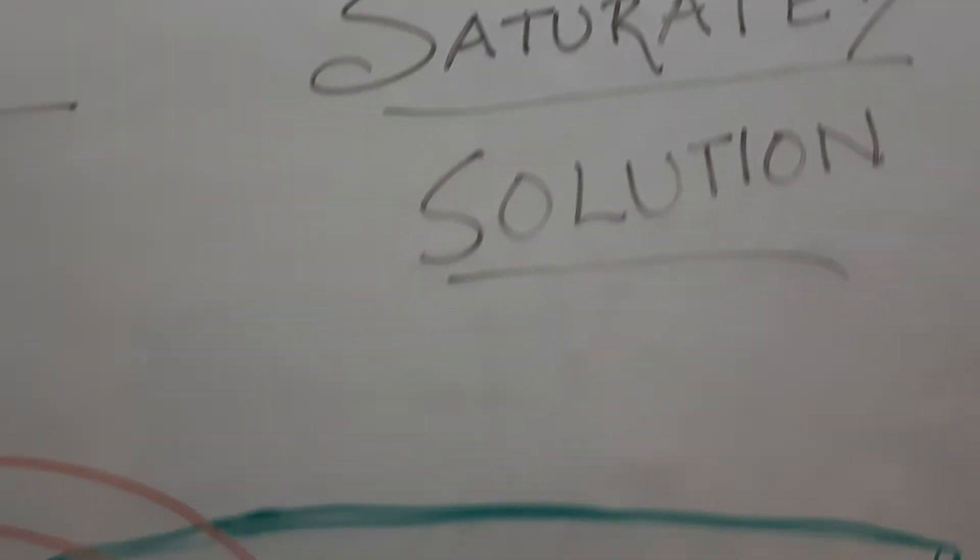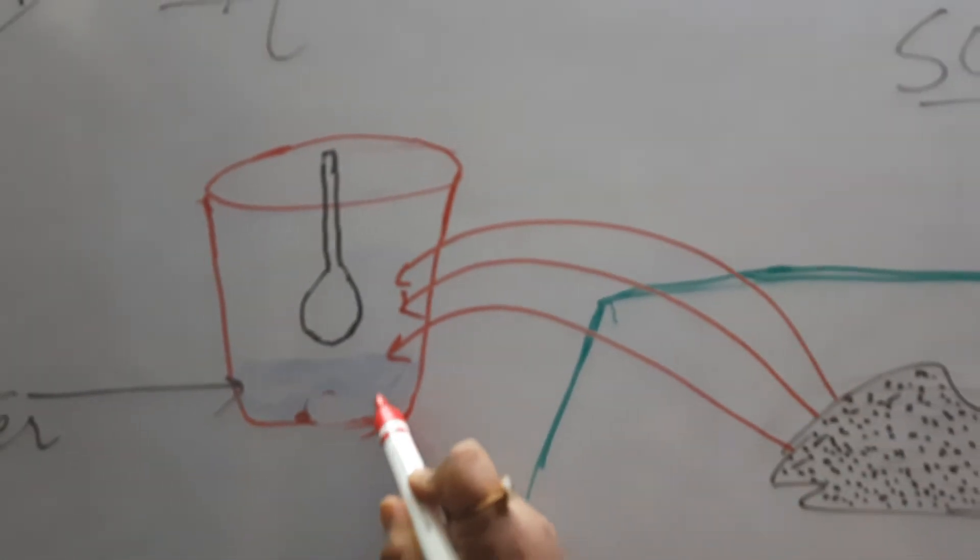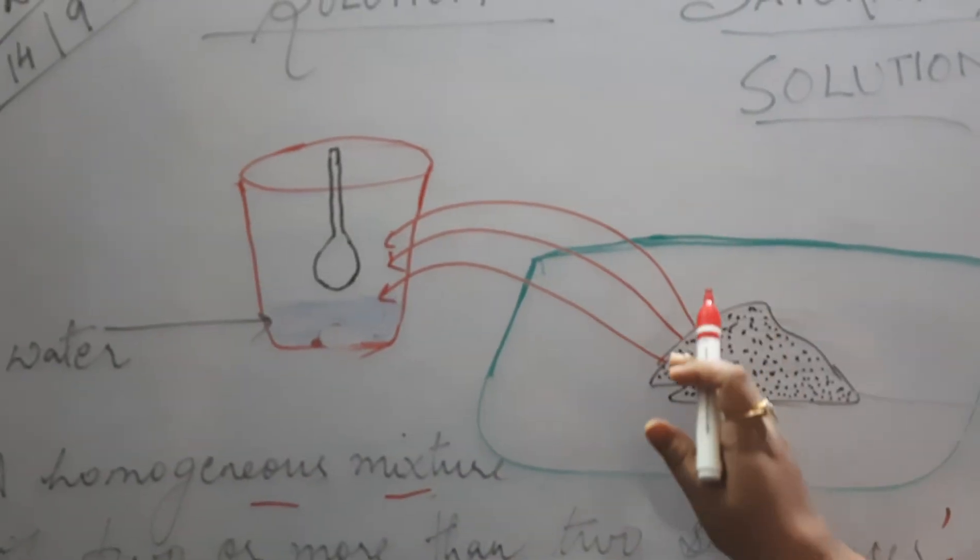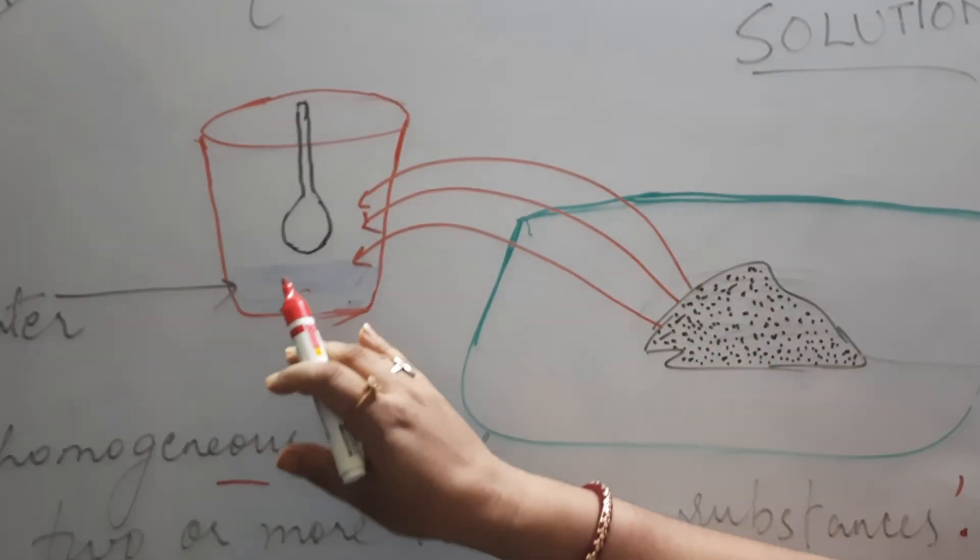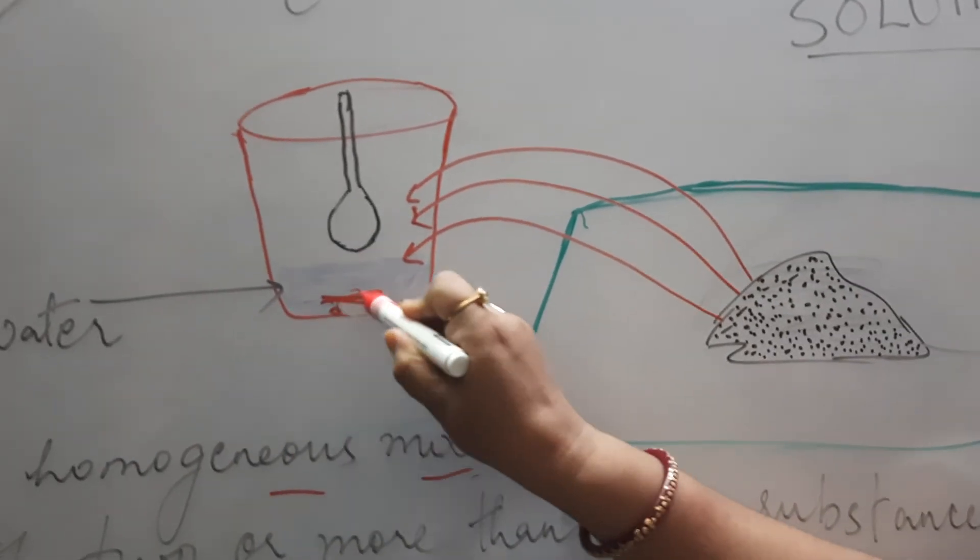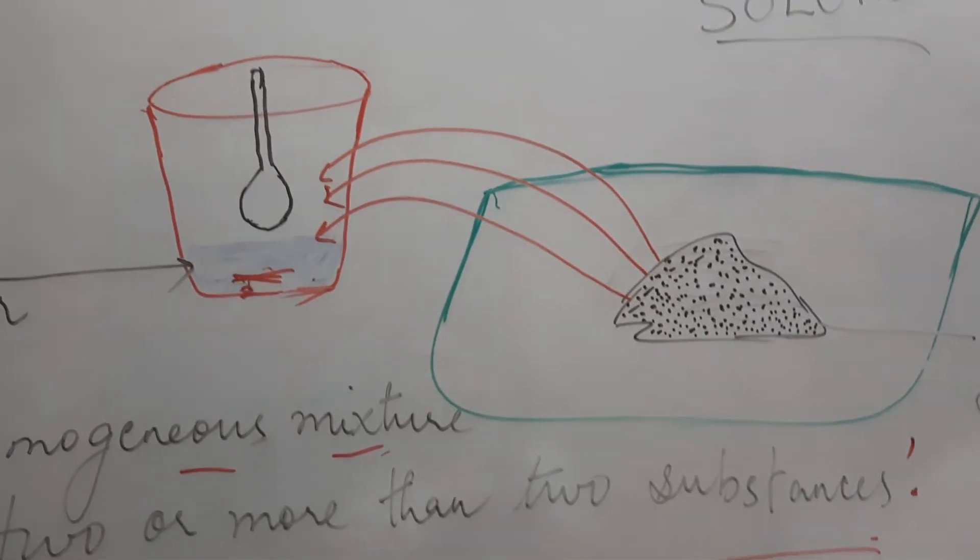In place of salt, if I add sugar over here and I add one teaspoon sugar, I mix it, second, third, and finally when I want to add more sugar and the sugar does not get added and it starts getting settled at the bottom, that stage is known as saturated solution.